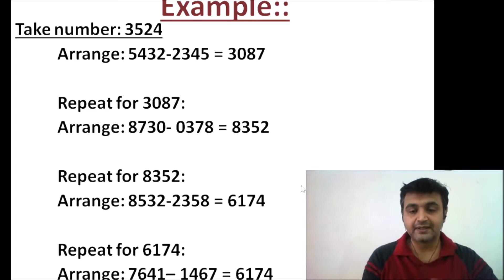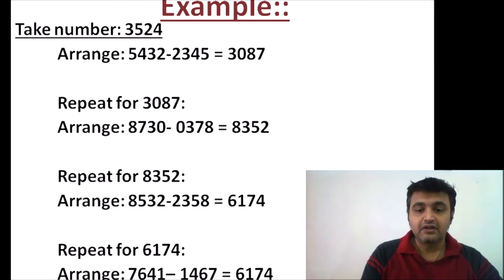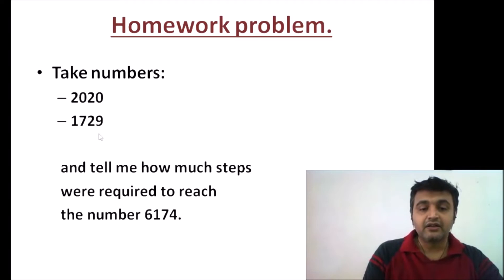I suggest you take two numbers. I've chosen 2020 because we are in the year 2020, and 1729, also called Ramanujan's number as I mentioned in my last talk. Take these two numbers, follow Kaprekar's routine, and tell me how many steps are required to reach 6174, like the previous example which took 3 steps.